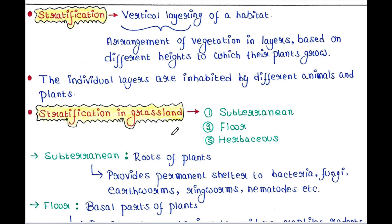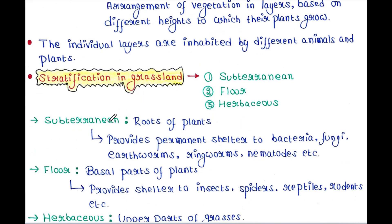We will now talk about stratification in grassland. It has three layers: subterranean, floor, and herbaceous. The subterranean layer contains the roots of plants. It provides permanent shelter to bacteria, fungi, earthworms, ringworms, nematodes, etc.